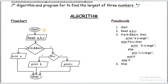We start with an oval shape. Then we have to read three numbers — the input symbol is a parallelogram. After reading the three values, we use a rhombus, which is used for conditional expressions.